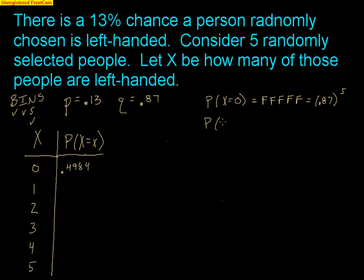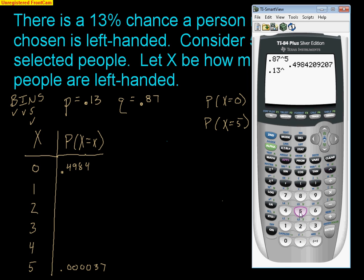The other easy one is all five people left-handed: probability X equals five. This can only happen one way — five straight successes — so that's 0.13 to the fifth. That's extremely rare. On the calculator you get a result with an e to the negative 5, meaning you move the decimal five places to the left, giving four zeros: 0.000037.